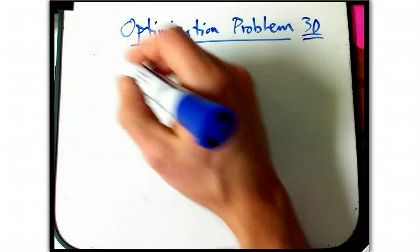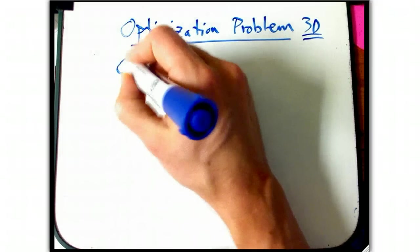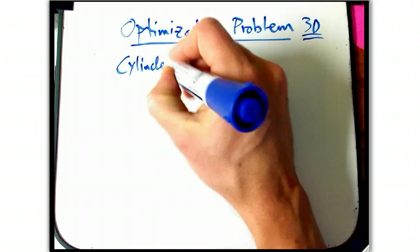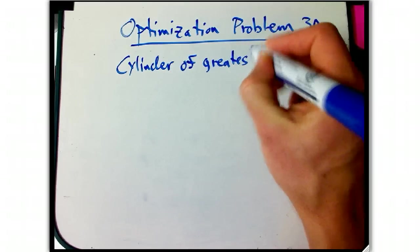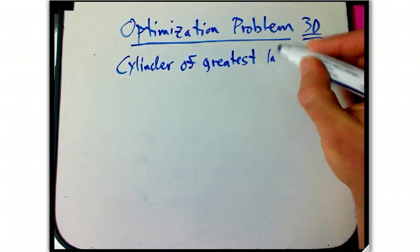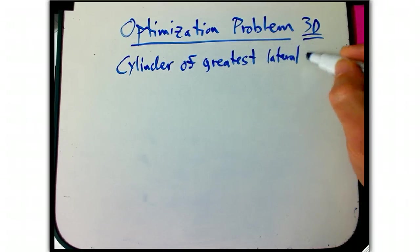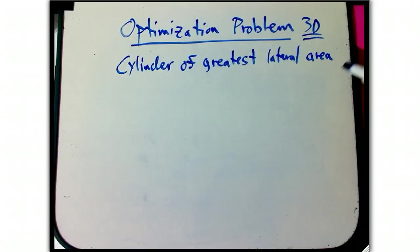But let me do a simple one. We want to find the cylinder of greatest lateral area, not the top and bottom, just the sides.